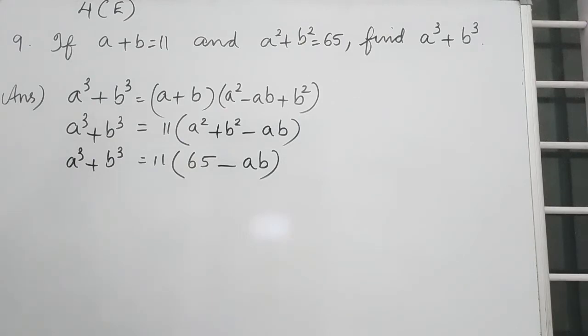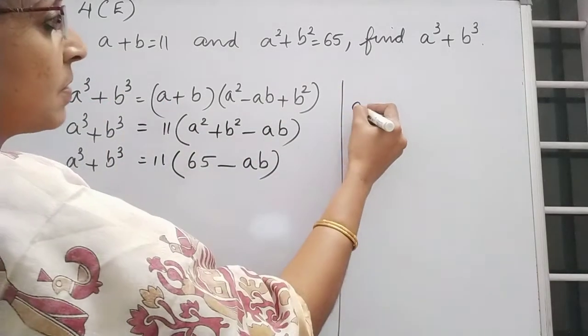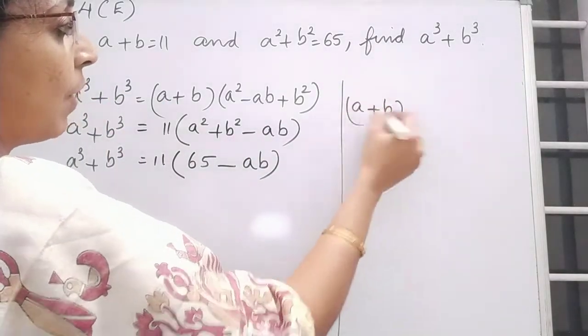We have A plus B whole square formula. A square plus B square. What about A plus B whole square? From there we will get the value of AB.